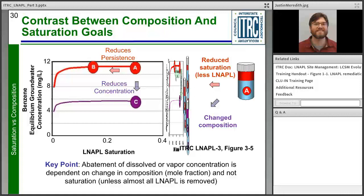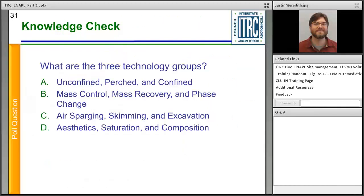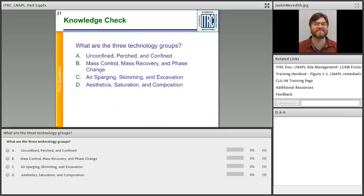The key point is that dissolved benzene concentration depends on the change in composition and the mole fraction. Research has shown that a reduction in saturation will have little effect on actual concentration until you've almost removed all of the LNAPL from the source. You may see benzene concentrations going down while pumping and treating, but often that's not due to actual LNAPL mass removal — it's due to what's happening in the subsurface and the breakdown of the LNAPL body itself, and how composition changes through time. You'll hear more about that with natural source zone depletion.